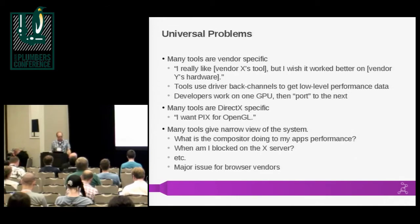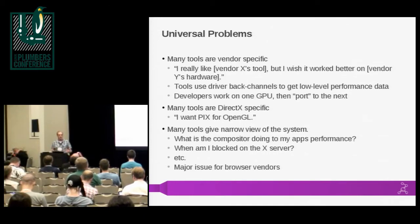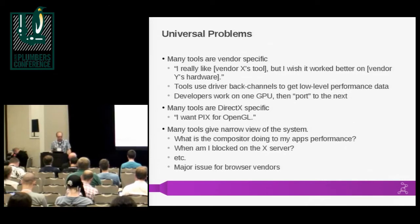A lot of times, and this is especially an issue for browser vendors — especially as they're implementing support for WebGL — you need systemic performance information. A lot of what is hurting the performance of your application is the compositor, the X server, other processes. There's a whole bunch of things interacting together, and you need this more global data to really be able to diagnose what's going on.